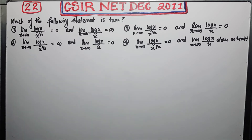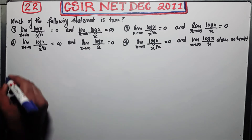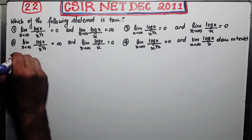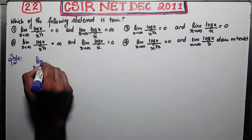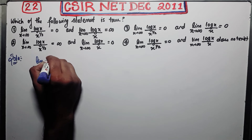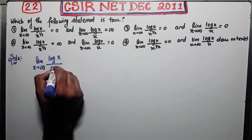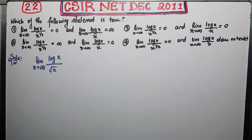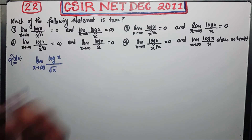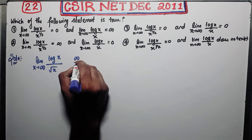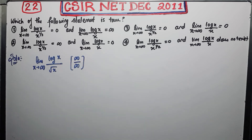What we have to do in this question is find out the limit. By looking at the question, we need to find the limit as x tends to infinity of log(x) divided by root(x). As you put infinity inside this function, you get infinity over infinity, which is an indeterminate form — an infinity/infinity indeterminate form — meaning you can use L'Hôpital's rule.